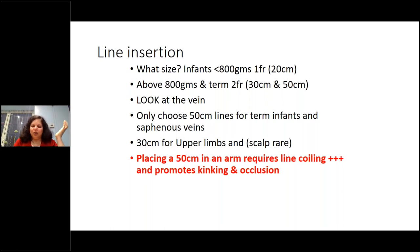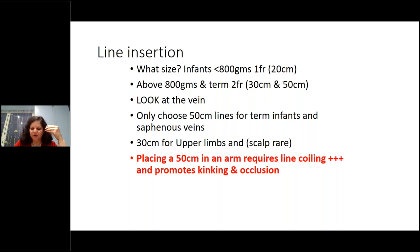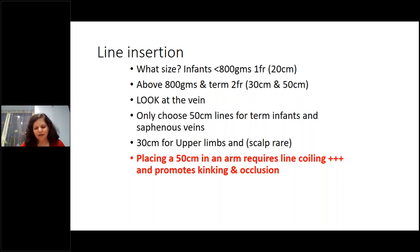For upper limb and scalp insertions, a 20 or 30 centimetre line is appropriate. Using a longer line than needed means excessive coiling, risking kinking, knotting, and occlusion — all problems you want to avoid.